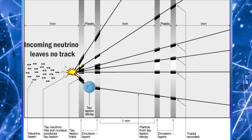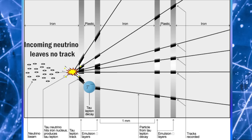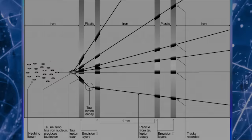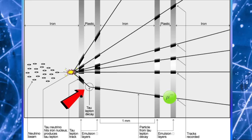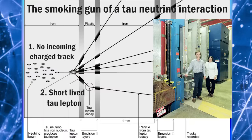The charged Tau lepton produced in this process has an extremely short lifetime, and only travels roughly one millimeter in the emulsion before decaying. Tau leptons can decay to a lighter charged lepton — an electron or muon — and two neutrinos. The lighter charged lepton is captured by the emulsion, but the two neutrinos disappear from view. So the second telltale sign of a Tau neutrino interaction is a short-lived tau track that shows a pronounced kink. The kink shows the point that the tau decayed, producing a lighter charged lepton. Emulsion detectors have such fine spatial and angular resolution that they can capture the passage of the short-lived tau lepton and its decay — the smoking gun of a tau neutrino interaction.